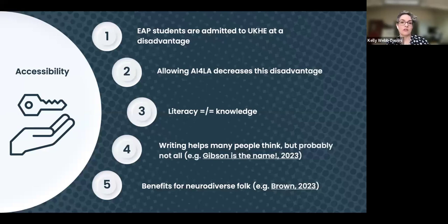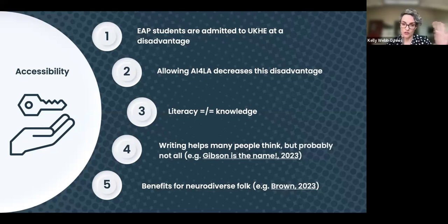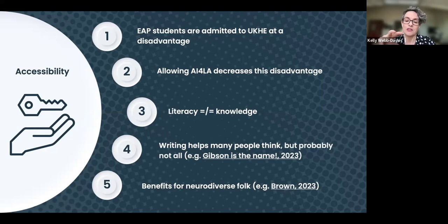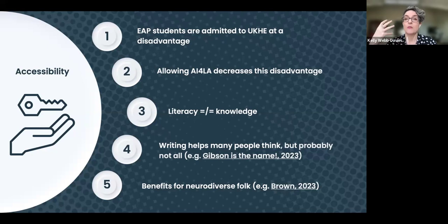For me this is an issue of accessibility. Students admitted at IELTS 6 or 6.5 are already at a disadvantage, and allowing them to use AI for language adjustment decreases that disadvantage. I hear people say 'writing is thinking' — that may be true for many, but not for everyone. Kelly Gibson, a secondary teacher in the US, gives an example of a student who has great ideas and can verbally explain arguments, but when writing them down they're almost unintelligible — there's a block, possibly undiagnosed neurodiversity.